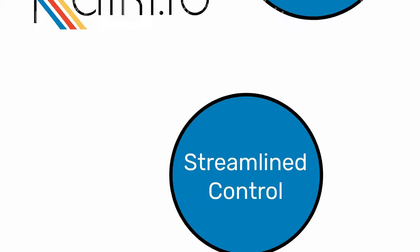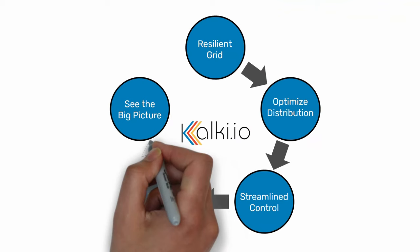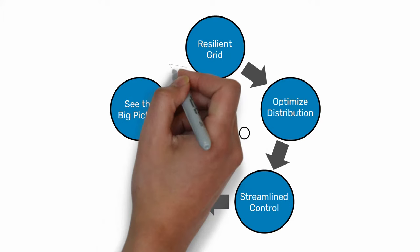Streamlined control helps in dispatching thousands of DERs with reliable asset modeling and maximum efficiency on the existing grid. Proactive responses gain critical insights through predictive forecasting and optimization of operational cost without market impact. The Kolki.io platform with add-on applications helps in seeing the big picture of the grid by visualizing critical data points, measuring the impact, and investigating the future state of assets through a unified platform.